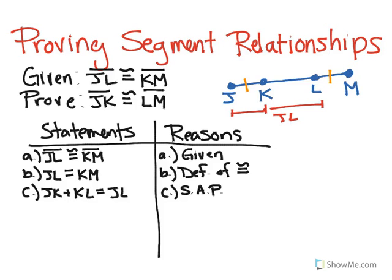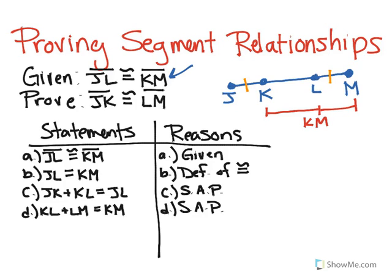We can actually do that again to get something for KM, because that's another part of my given information. So I could say that LM plus KL is KM — and that could also be helpful. Even if you're not sure where you're going, list out as many different pieces of information as you can. So I added that into our proof.